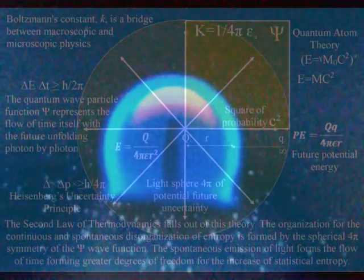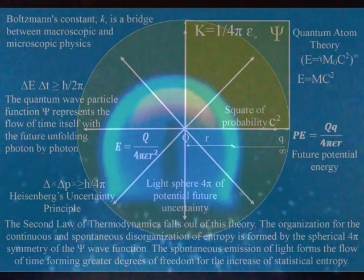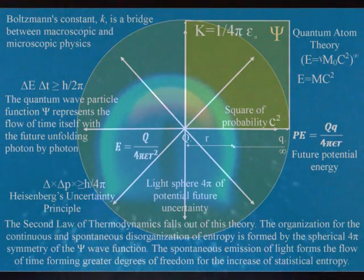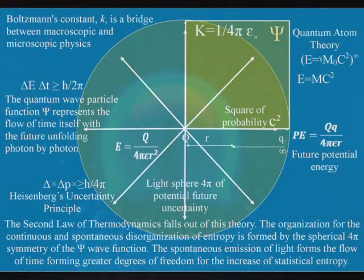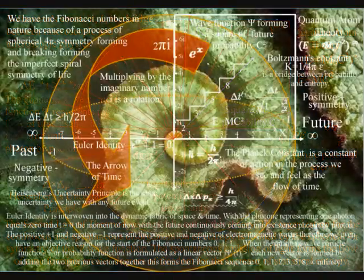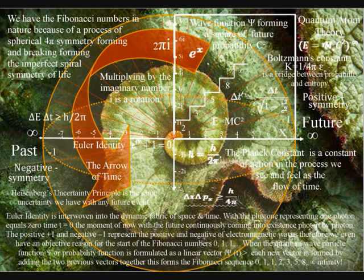Nothing has lower entropy or greater organization than a sphere. When the spherical symmetry is broken, it forms the most beautiful of all geometrical shapes: the spiral. Therefore we see the Fibonacci spiral almost everywhere in nature, not because of economy of growth, but because of a process of symmetry forming and breaking.